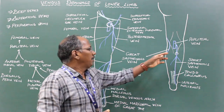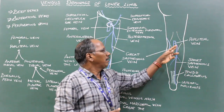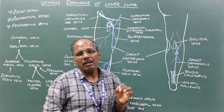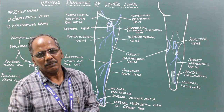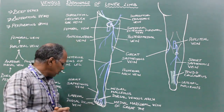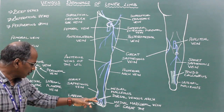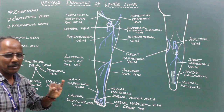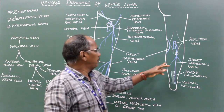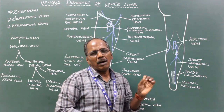And finally, it reaches the popliteal fossa where it drains into the popliteal vein. Tributaries: number one, lateral dorsal digital vein of the little toe in the foot; number two, medial and lateral sural veins.